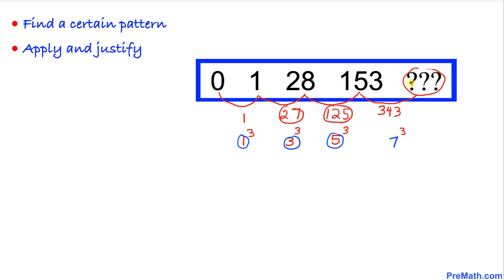So now the next number is going to be 153 plus 343. If we add this, we are going to get 496.